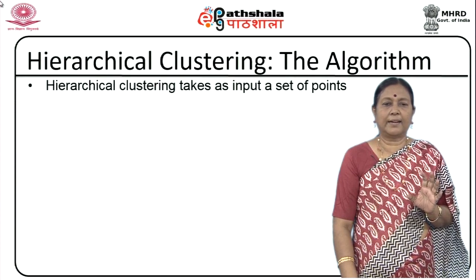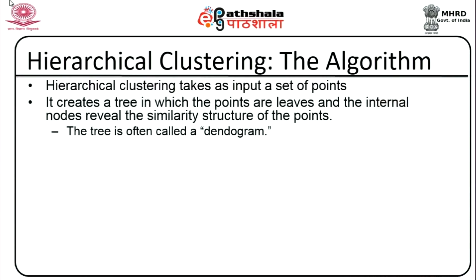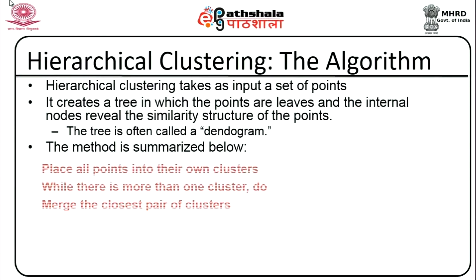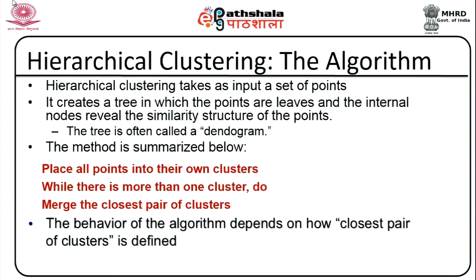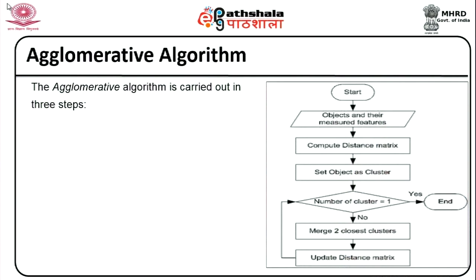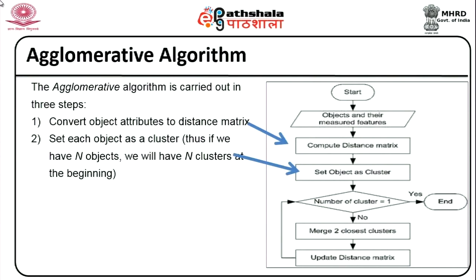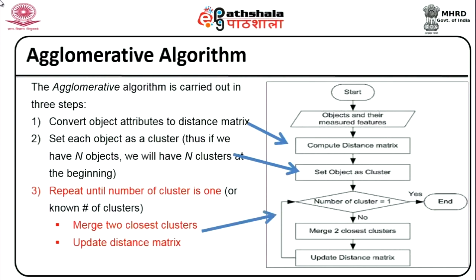The hierarchical clustering algorithm takes a set of points as input and creates a dendrogram — a tree where points are leaves and internal nodes reveal the similarity structure. The method is: place all points into their own clusters, then while more than one cluster exists, merge the closest pair of clusters. The algorithm proceeds in three steps: convert object attributes into a similarity matrix, set each point as its own cluster (n clusters for n objects), then repeatedly merge two cluster points and update the distance matrix until one cluster remains or the desired number is reached.